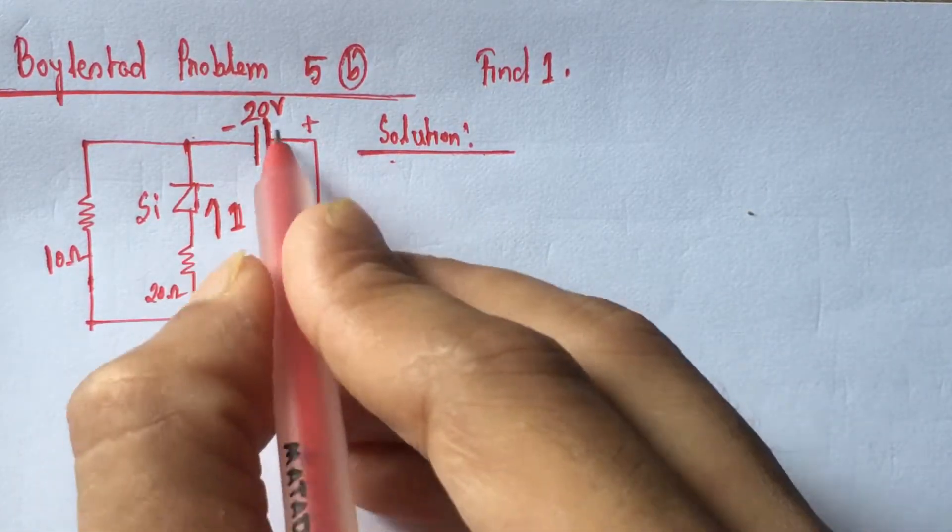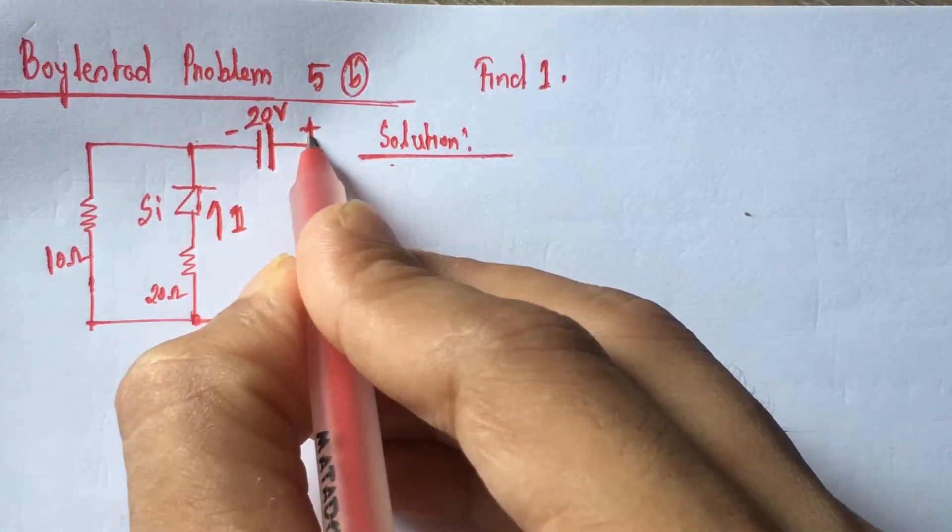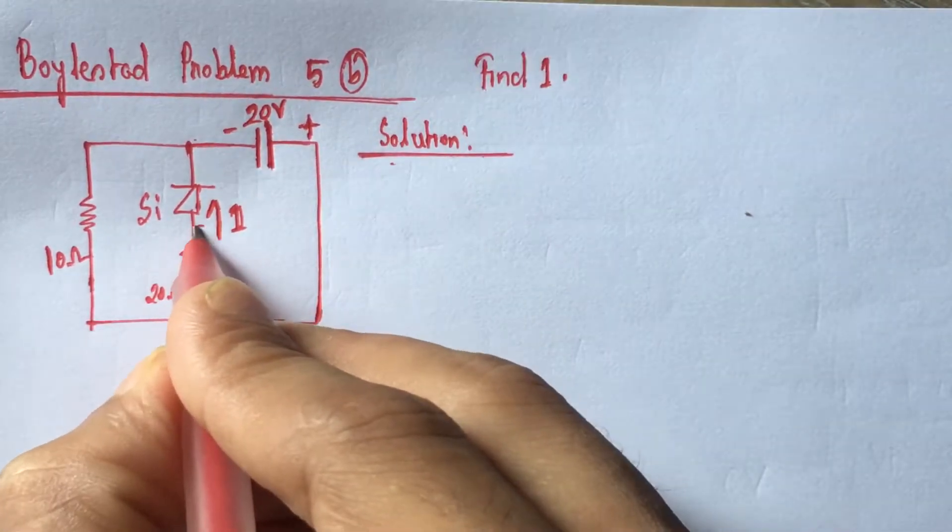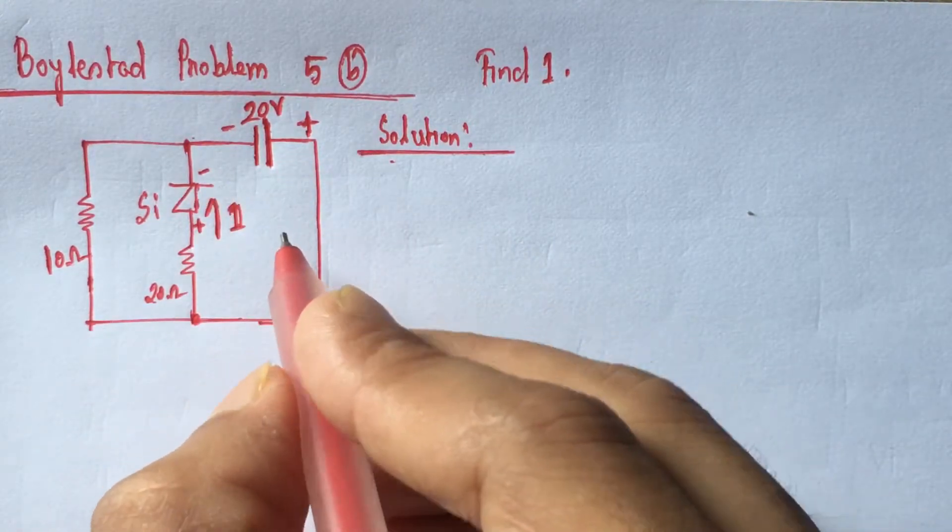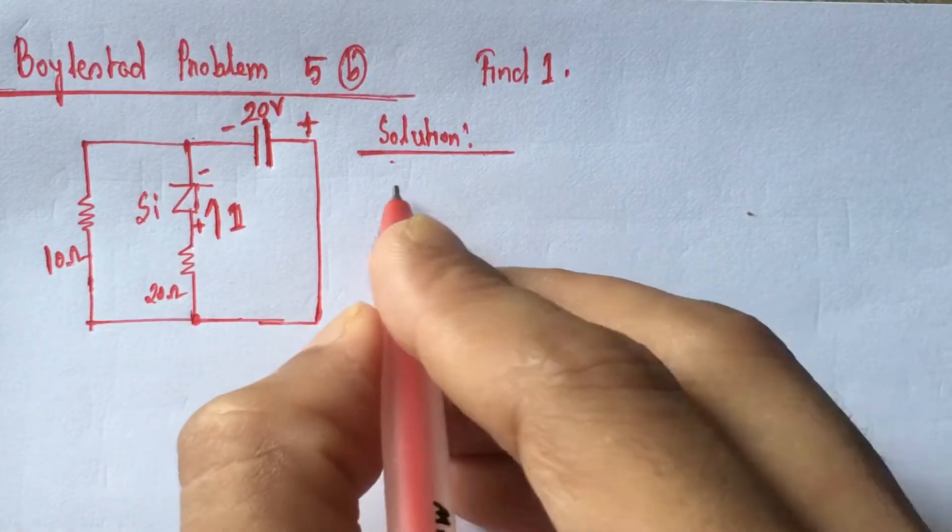Now, from the circuit we see that this is the positive end of biasing voltage and this is the positive end of diode, this is the negative end of diode. So, the diode is forward biased, that is diode is on.